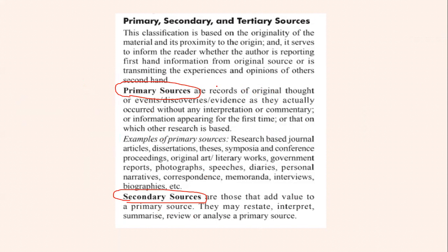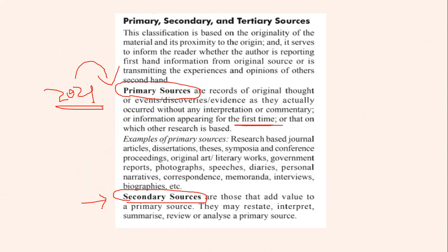Primary sources are information without any interpretation — information which is done for the first time, maybe the collection of data. Like for example, the census 2021 — this information is a primary source. But when this information gets live on the government websites, then we can take that information to study or do certain research work on that, and that information becomes a secondary source, secondary data.